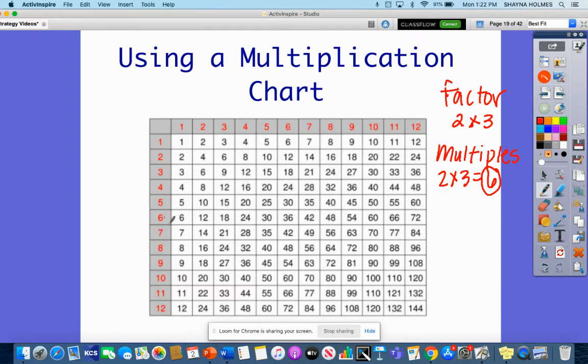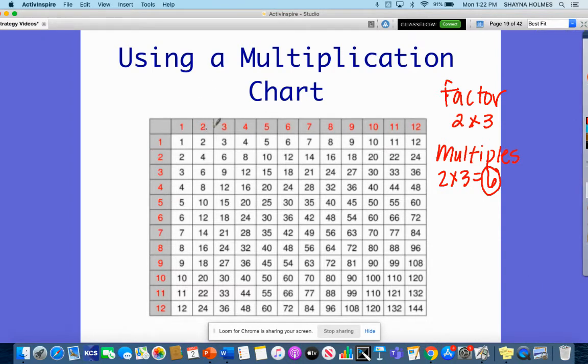That means all the numbers down here on the side, those are our factors. And all the numbers inside the multiplication chart, those are our multiples. Now we're also going to be talking about prime and composite numbers.